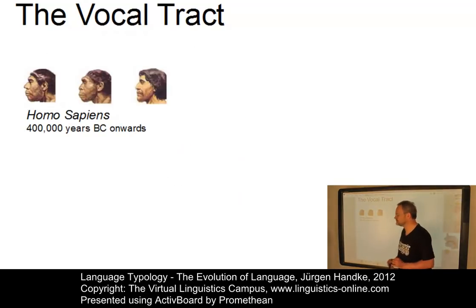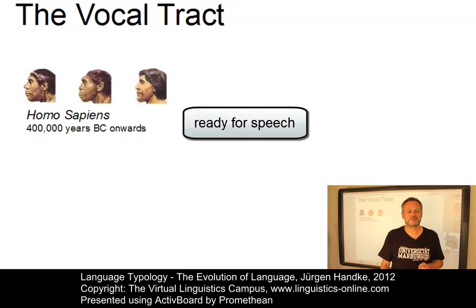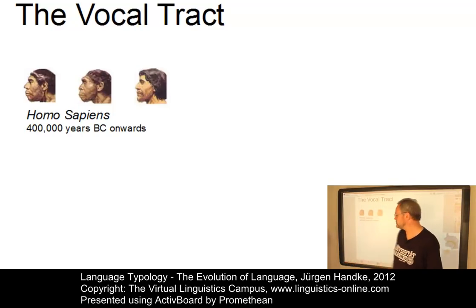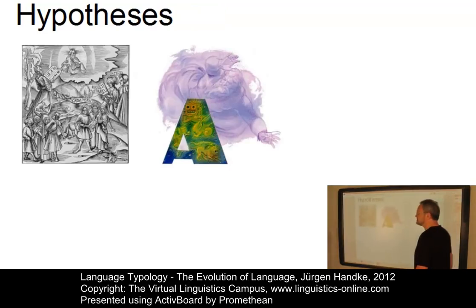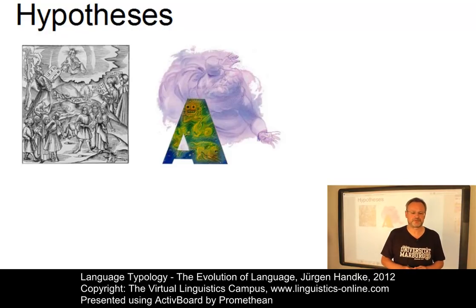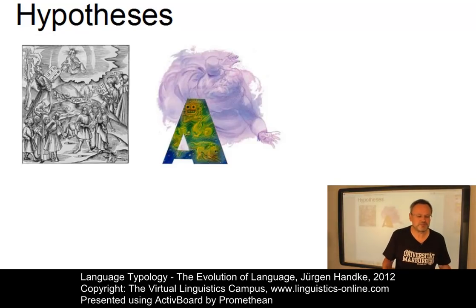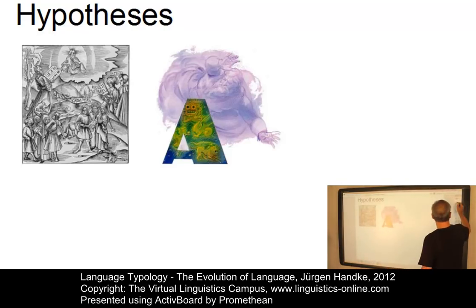With the advent of Homo sapiens at around 400,000 years before Christ, the vocal tract gradually became ready for the use of some sort of speech with a relatively large sound repertoire. But why did language emerge? This leads us to the discussion of hypotheses of language origin. That the predecessors of Homo sapiens were capable of using some sort of communication system is undisputed, but the initial impetus for the use of language is unclear. Setting aside theological claims, there are several modern hypotheses about the emergence of language. One of them is referred to as the gestural hypothesis.